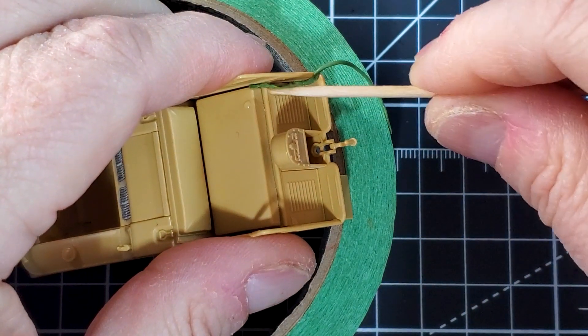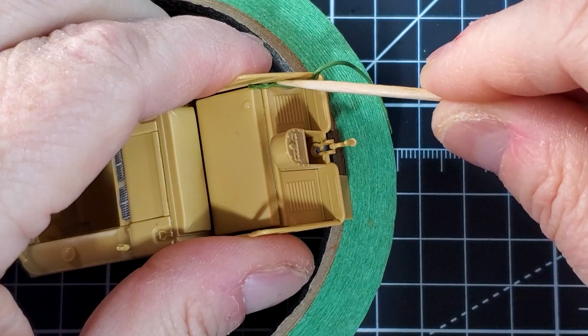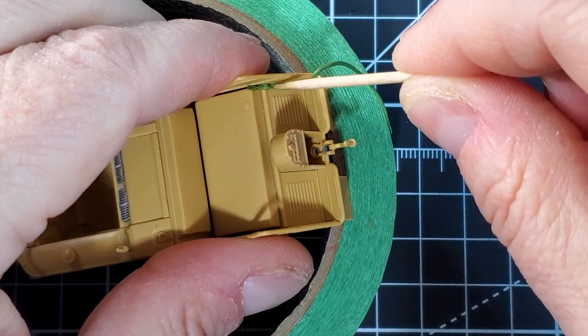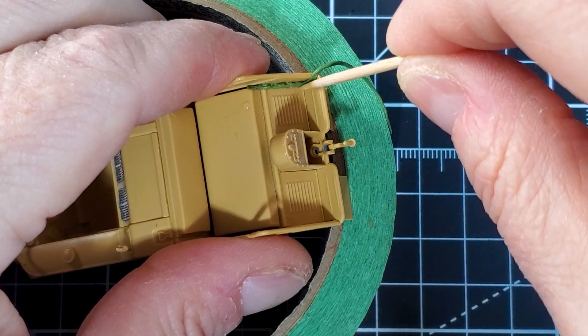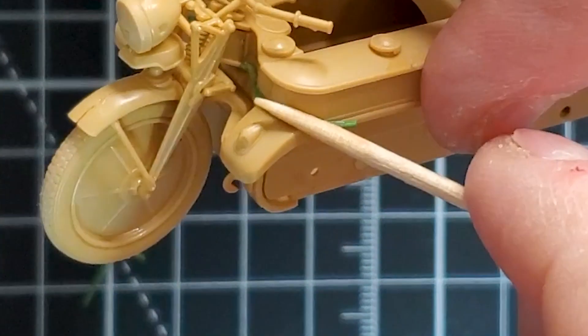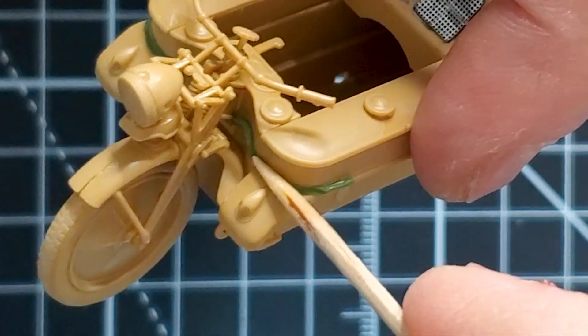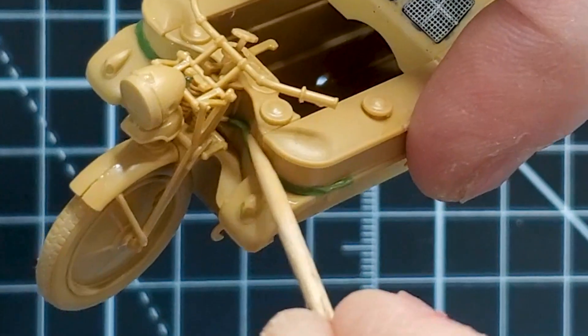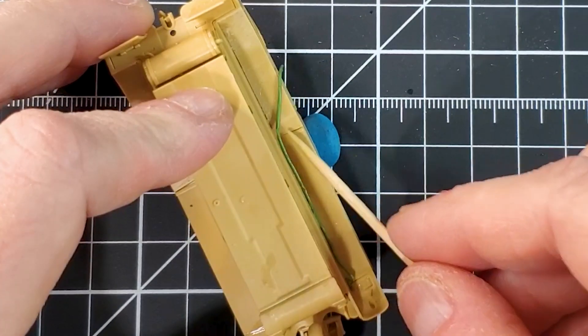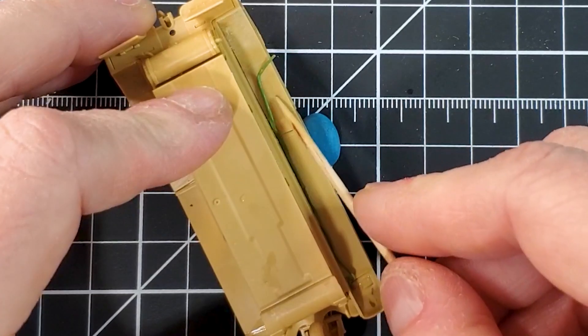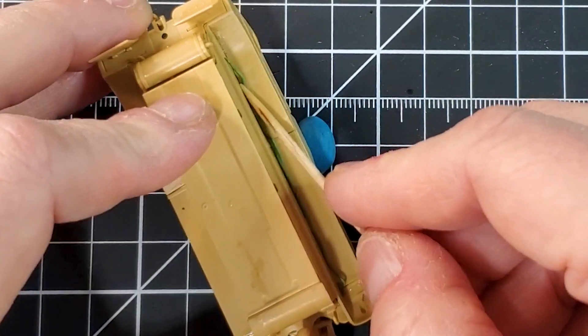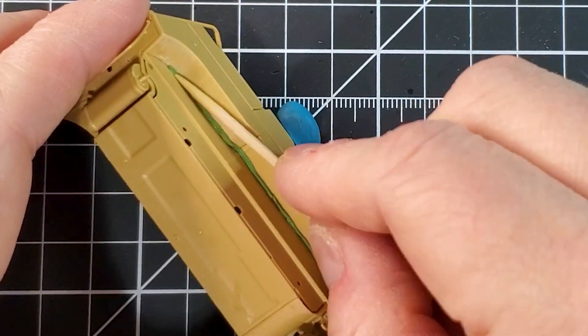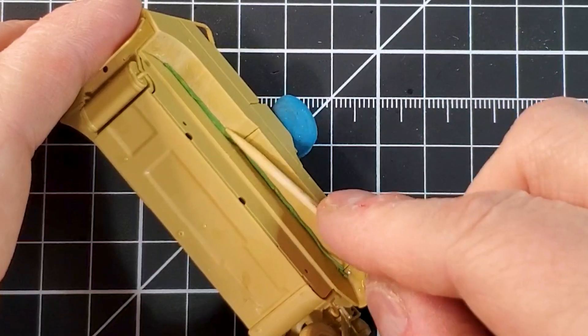Weld seams are a really nice detail that you can add to any of your models. This one is a really small model, but if you're working on, for example, a Tiger or a Panther or a big tank like that, or even for example a Sherman tank or an M18 Hellcat or something like that, the weld seams are bigger and you have a lot more weld seams on your vehicle. So it's a nice touch to add a lot more details to any of your builds.